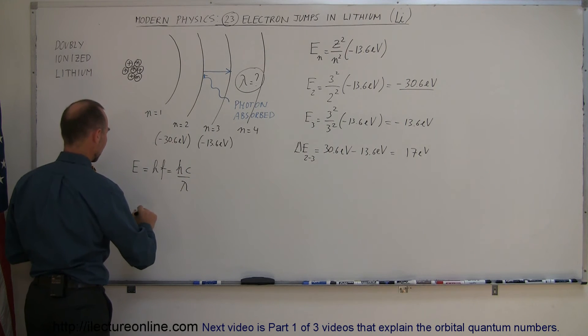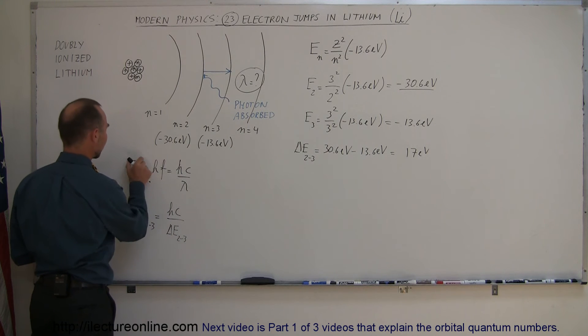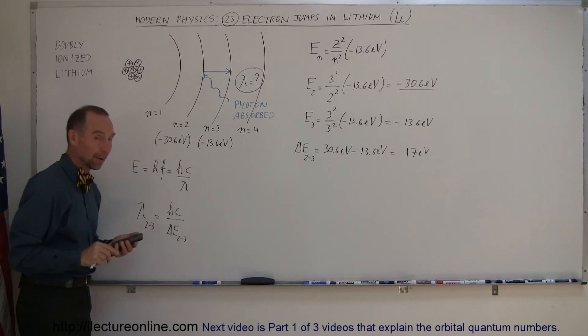So, therefore, lambda, the wavelength going from 2 to 3, is equal to HC divided by the difference in the energy going from 2 to 3, by putting the wavelength over here and energy down there.